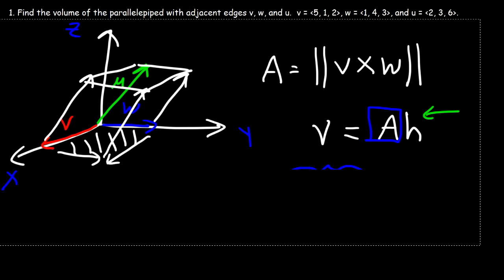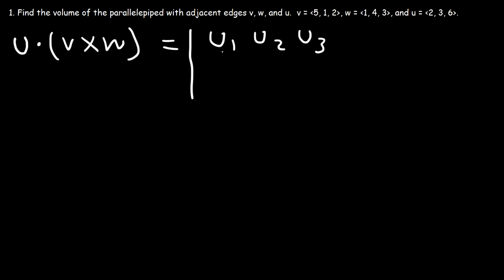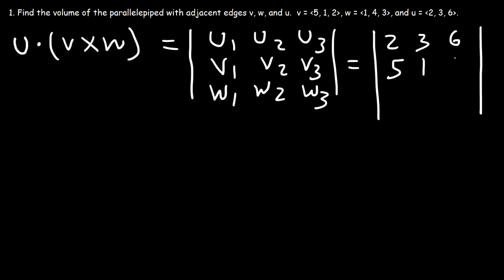So now let's focus on this problem and get the answer. To evaluate the triple scalar product, all we need to do is find the determinant of a 3×3 matrix. Write vector U in the first row, vector V in the second row, and vector W in the third row. So vector U is 2, 3, 6; vector V is 5, 1, 2; and vector W is 1, 4, 3.